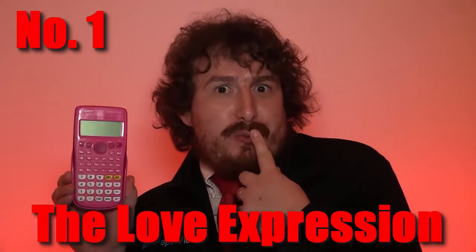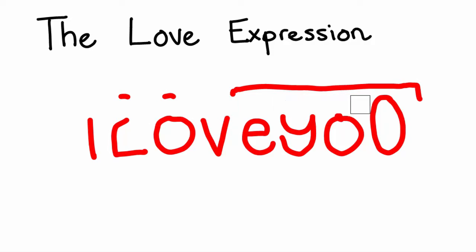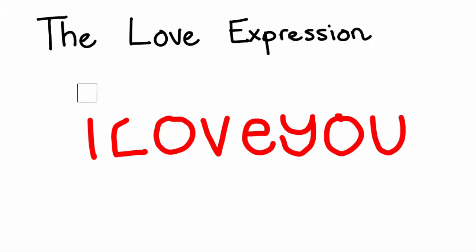Number one: the love expression. If you're a beginner in love working at the grade eight or nine level, then simplifying this easy expression is the way to go. Now, 128 times by the square root of E 980 might look complicated at first, but all you have to do to simplify this is — boom — done.